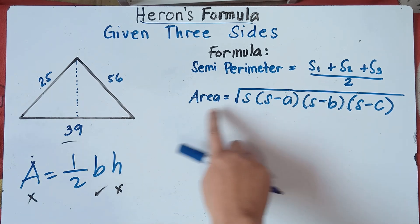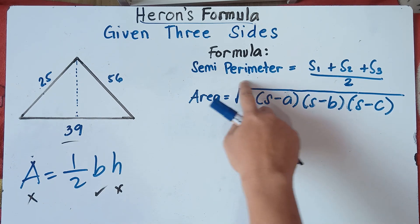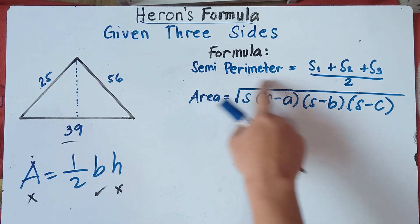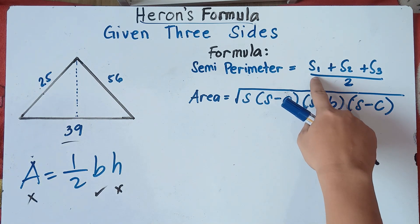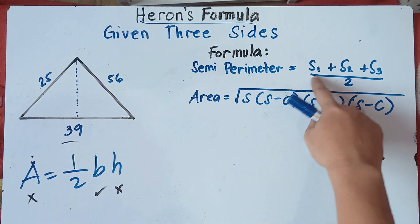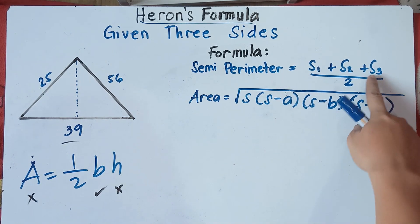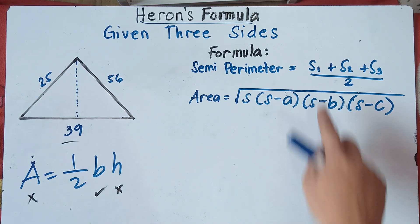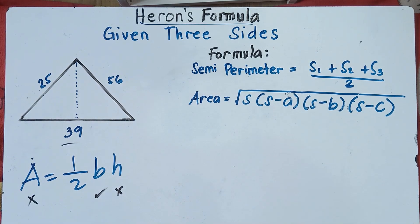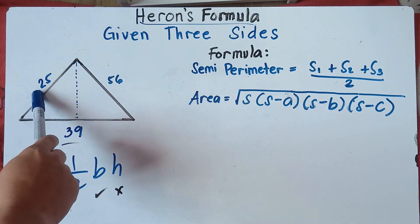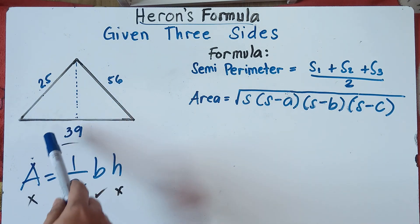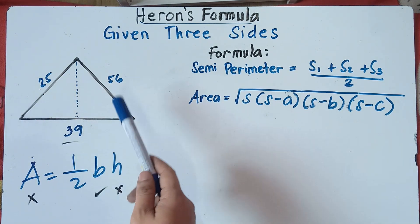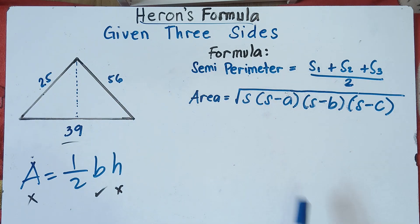Now, what is S in Heron's formula? S is the semi-perimeter. To get the semi-perimeter, just add the three sides — side one plus side two plus side three — and divide it by two. So you can choose either 25, 39, or 56 as your first side. We have 25 plus 39 plus 56, divided by two. That's the semi-perimeter.